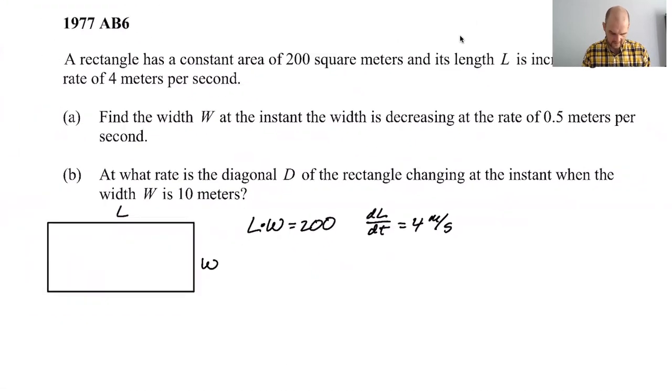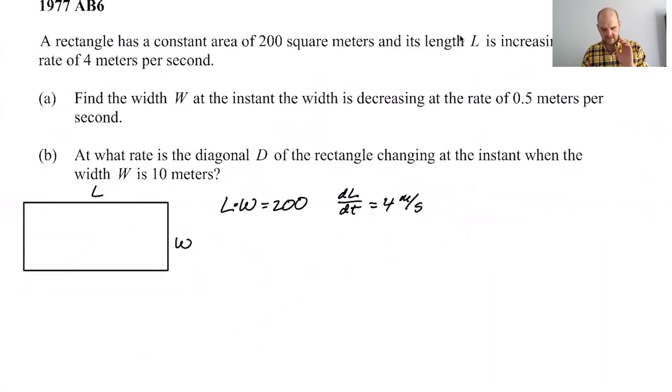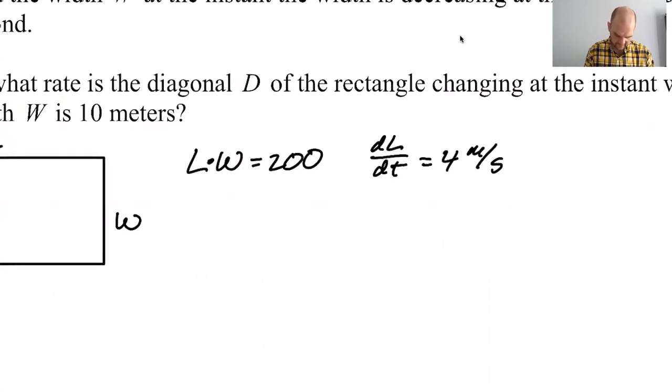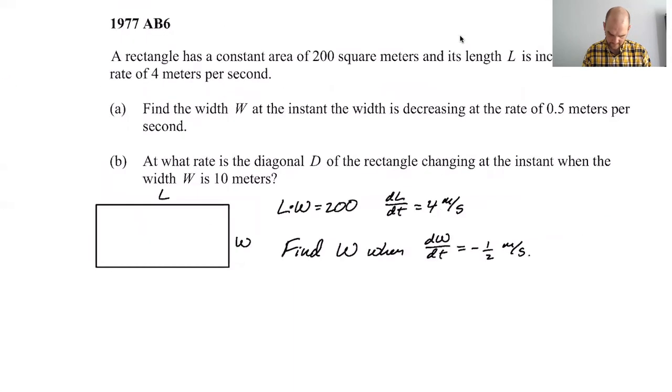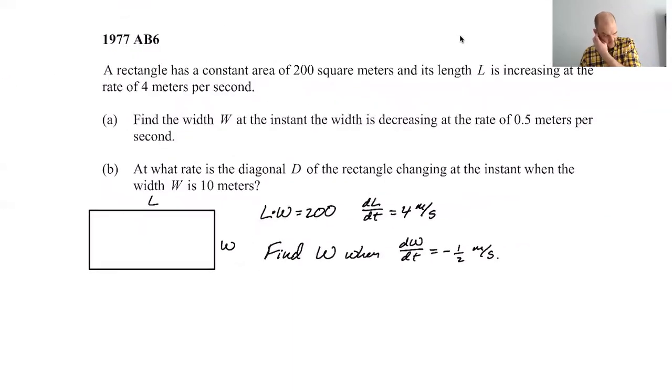Find the width W at the instant that the width is decreasing, so when dW/dt is negative 0.5 meters per second. So we're going to try to find W when dW/dt is negative 1.5 meters per second. All right.